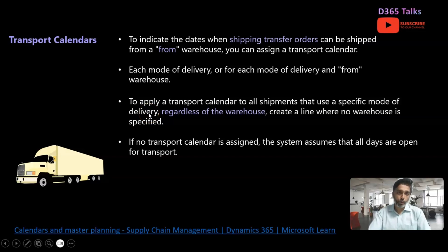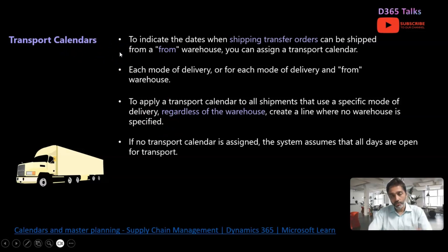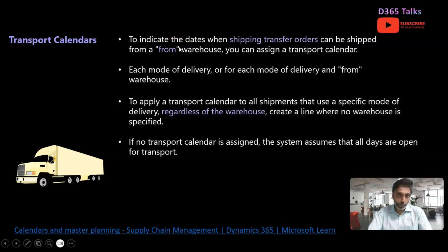The next important calendar to configure is the transport calendar. The transport calendar is used to calculate transportation deliveries — the dates that the system is supposed to consider when shipping transfer orders or any other sales or deliveries. Transport calendars are predominantly used for shipping transfer orders. When planned transfer orders are generated, the system checks the transport calendars and based on that it suggests the ship and receive date.